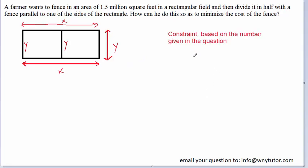The constraint equation is going to always be based on the number that is actually given in the question. In this case, the number given in the question is 1.5 million square feet, so we're going to base our constraint equation on that number. We want to notice that square feet is a unit of area, so our constraint equation must involve the area of our rectangular field.